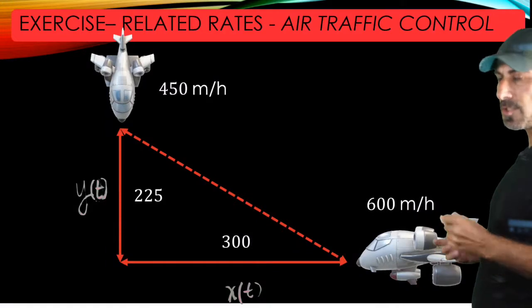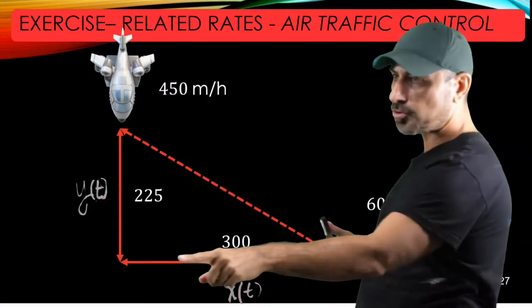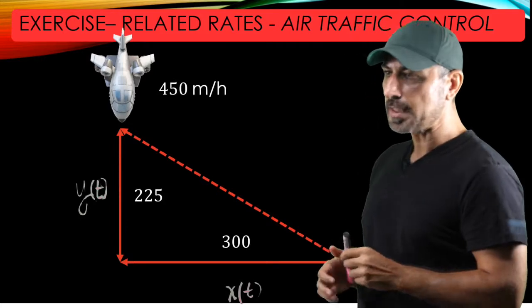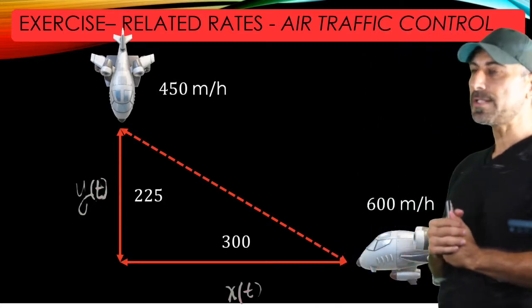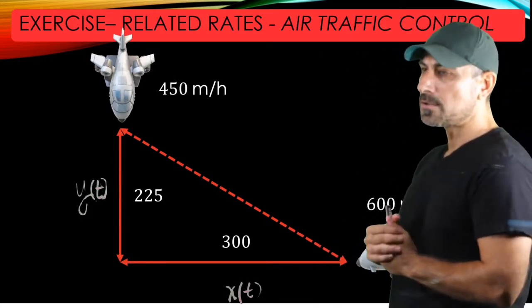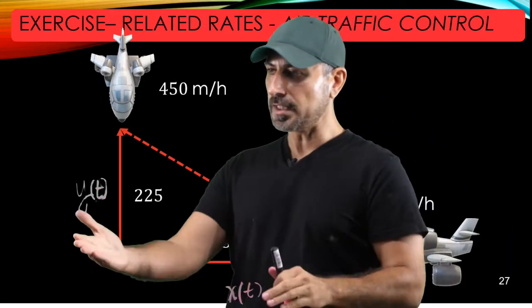From pre-calculus, we remember that if you have a right triangle, the hypotenuse of the triangle is found by the Pythagorean theorem, which is the square root of the sum of the squares of the sides.